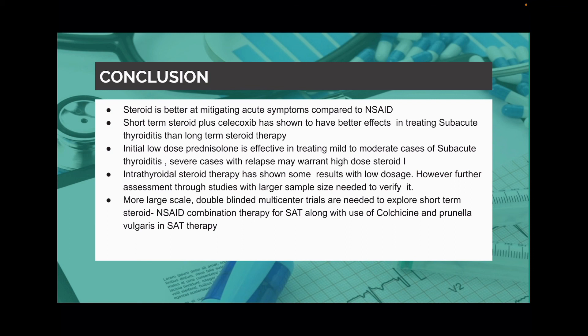In conclusion, steroid is better at reducing acute symptoms compared to NSAIDs. Short-term steroid therapy plus celecoxib has shown to have better effects than long-term steroid therapy. Initial low-dose steroid is good, and a long tapering period is preferred. More large-scale double-blinded multicenter trials are needed to explore this condition.